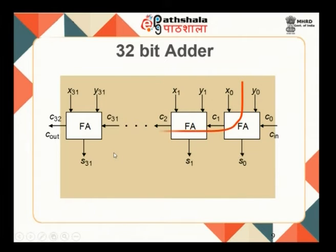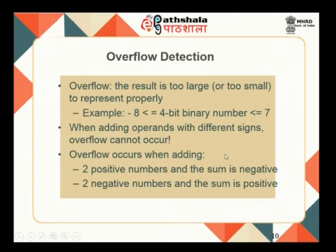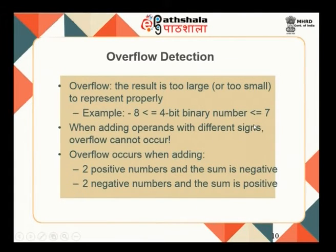If you look at the critical path — the longest path that takes the longest time to traverse in the circuit — it is the last sum bit that is getting generated. You also have to look at overflow detection. Overflow occurs when the data is too large or too small to represent using the number of bits available. For a 4-bit number with 2's complement representation, the range is +7 to -8; if a number goes beyond this, overflow has occurred.